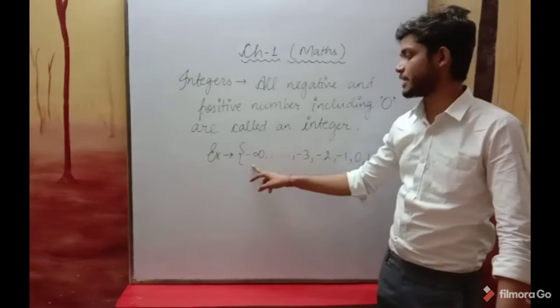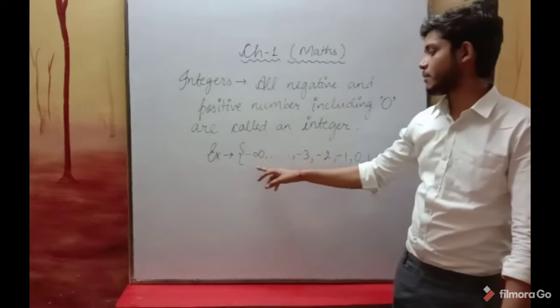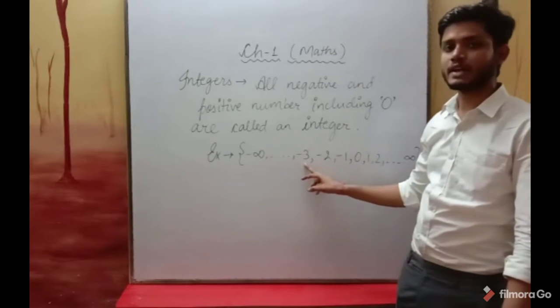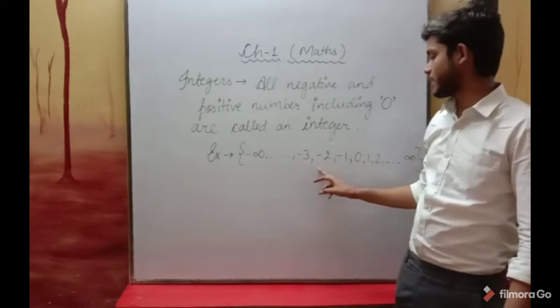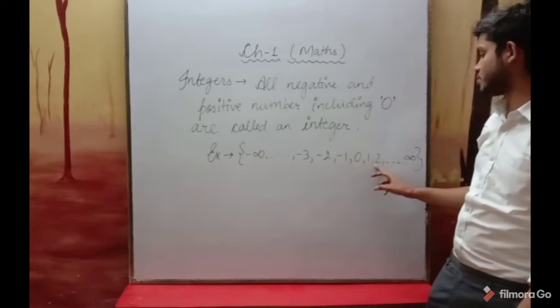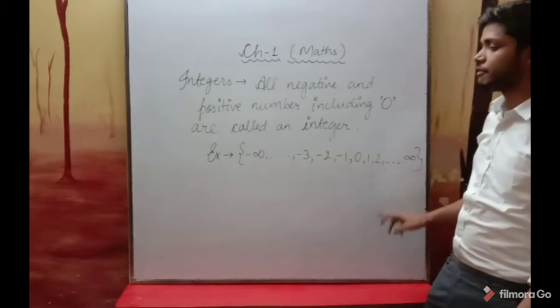So, the number line starts from minus infinity. It goes: minus infinity, minus 3, minus 2, minus 1, 0, 1, 2, 3, and then positive infinity.